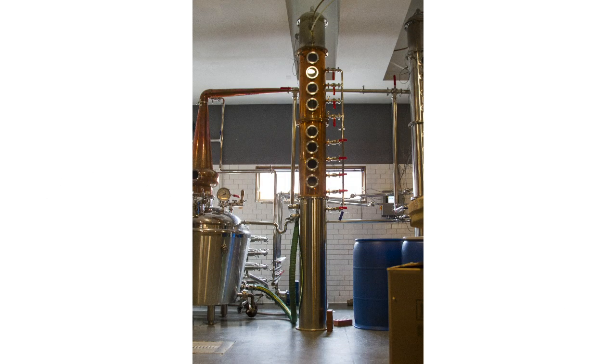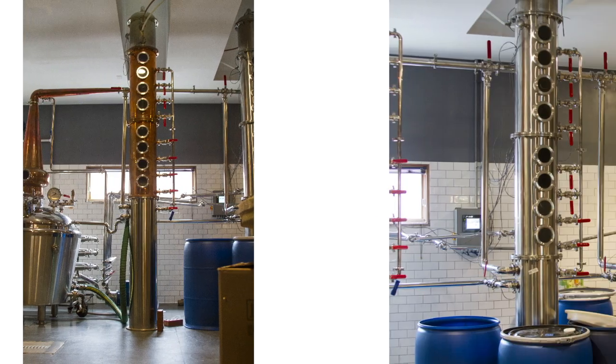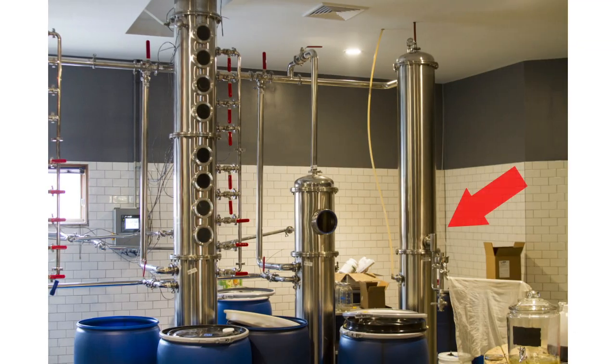This process continues until vapor with a high enough fraction of ethanol, and therefore a low enough boiling point, to reach the top of the column is formed. This vapor then makes its way to a condenser tube, where it is cooled back into a liquid and collected.